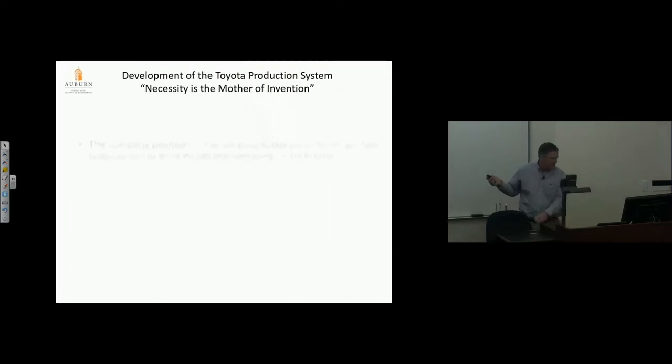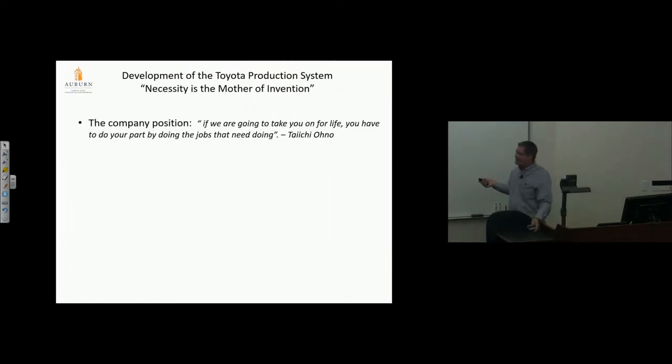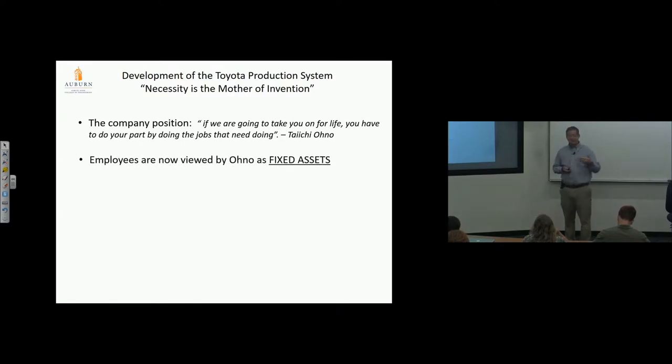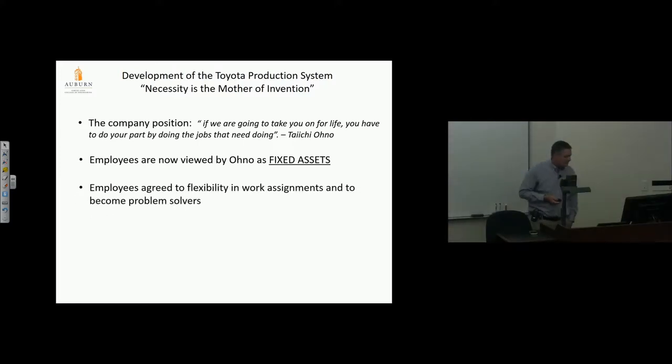Wages were steeply tied to seniority rather than job function, and tied to company profitability through bonuses. Taiichi Ono's position: 'If we're going to take you on for life, you have to do your part by doing jobs that need doing.' Ono thought, I have this burden of a fixed asset—the employees. I need to make the most of what we have.